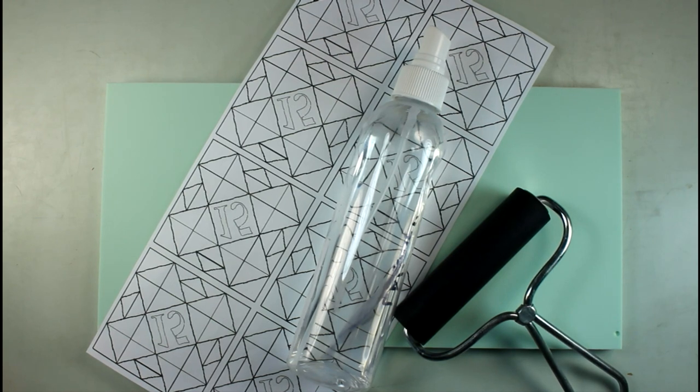To apply your pattern on easy board, you'll need your pattern printed on a laser printer or photocopy machine. An inkjet printed pattern will not work. You'll also need lacquer thinner and a hard rubber roller.